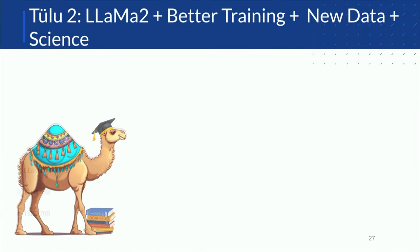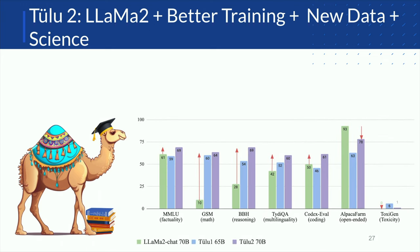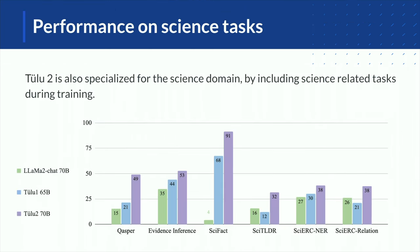With the LLaMA 2 model becoming available, we started putting all these things together: better base model, better training methodology, new data, and added scientific text. Our TULU 2 model is able to understand science text. Our new results show TULU 2 at 70B is better compared to our earlier version and also compared to LLaMA 2 Chat. For the purpose of making these models useful for scientists, we evaluated on a group of scientific datasets — for example, answering and extracting information from scientific papers — and we are much better compared to LLaMA 2 Chat.